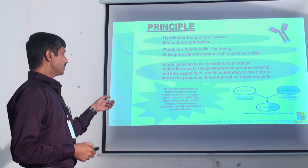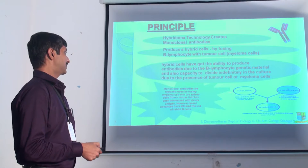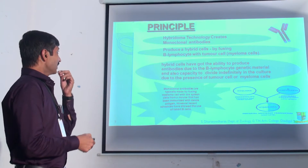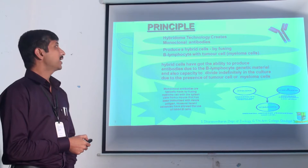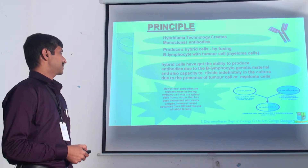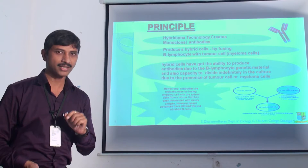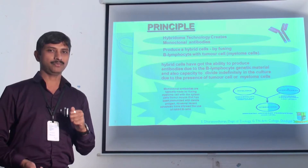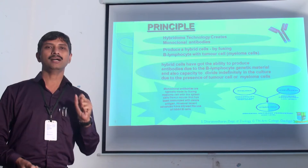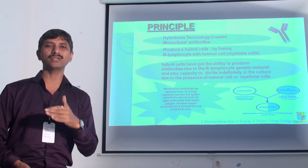The monoclonal antibodies are typically made by fusing myeloma cells and B lymphocytes. That B lymphocyte should be immunized with the desired antigen. Hybridoma technology creates monoclonal antibodies by producing hybrid cells through fusing B lymphocytes with myeloma tumor cells. Hybrid cells have the capacity to produce antibody because they carry the genetic material of B lymphocytes, and they can also proliferate in culture medium. B lymphocytes can produce antibody but cannot be cultured in vitro due to their very short lifespan — even within a single day they will be destroyed.